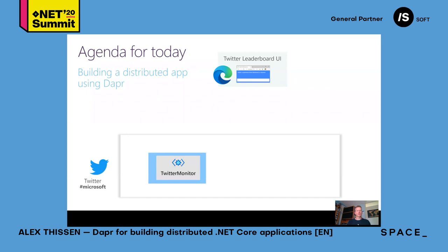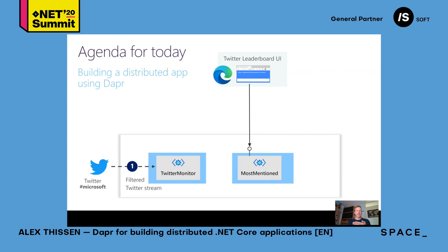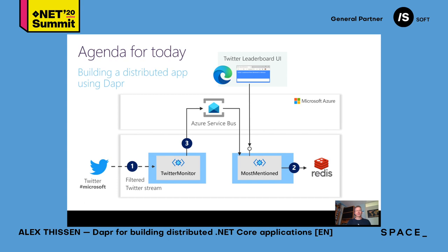To build that, we will create a distributed application consisting of two moving parts. First, there is a Twitter monitor that will get the filtered stream from Twitter, watching for hashtag Microsoft, and it will send all those Twitter messages to another part of our application that handles the users mentioned most. We will keep track of all the accounts and provide a leaderboard with a web API. It will store data in Redis cache, and we need to communicate between the two using cloud components and a service bus for decoupling. We will also use SignalR server to send out notifications when the leaderboard changes.